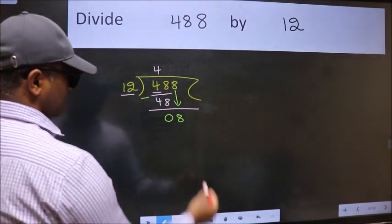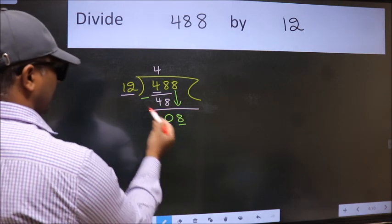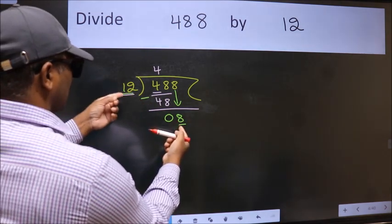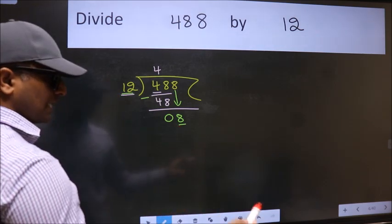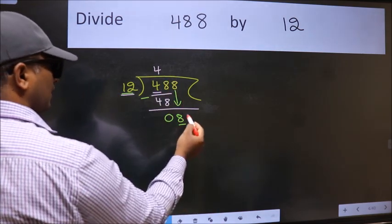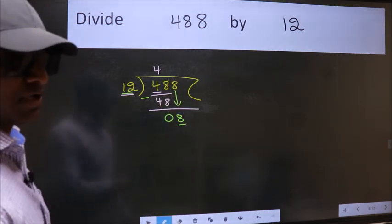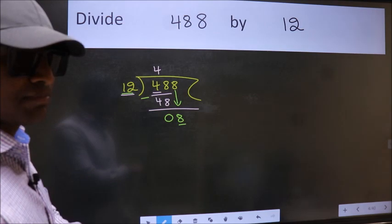And the mistake is this: here we have 8 and here 12. 8 is smaller than 12. So what many do is they directly put dot, take 0, which is wrong.